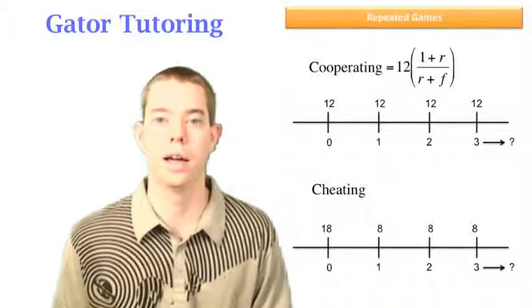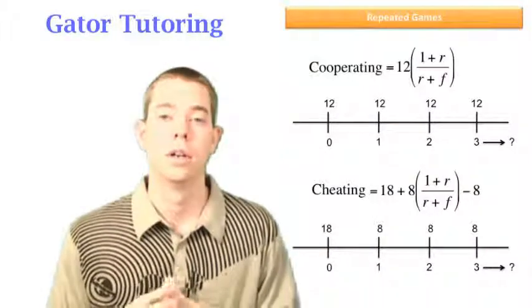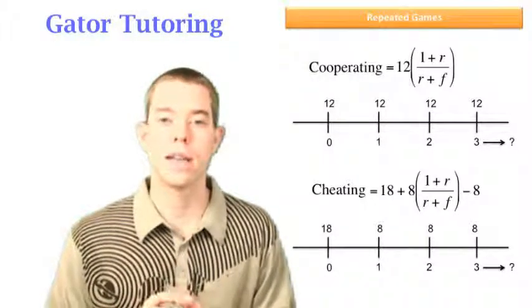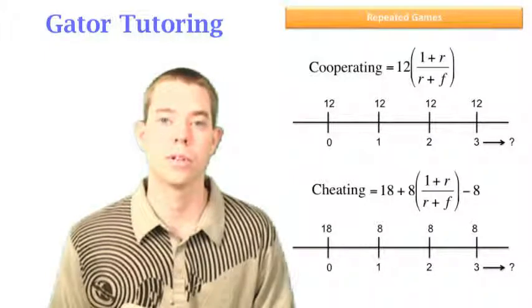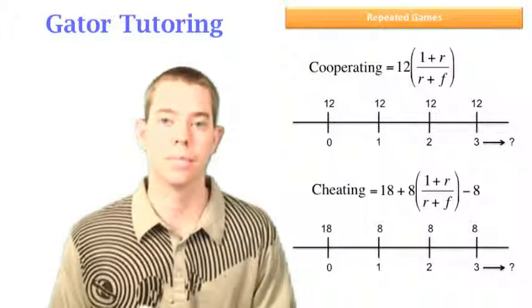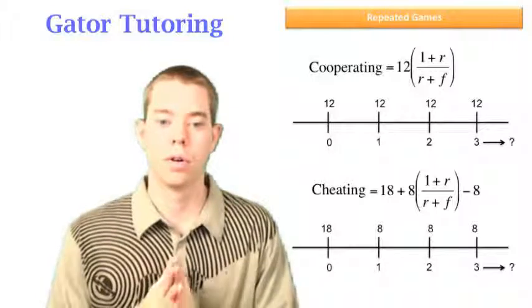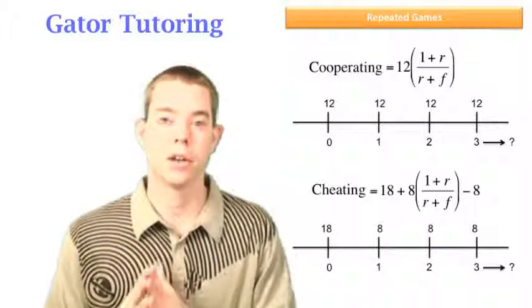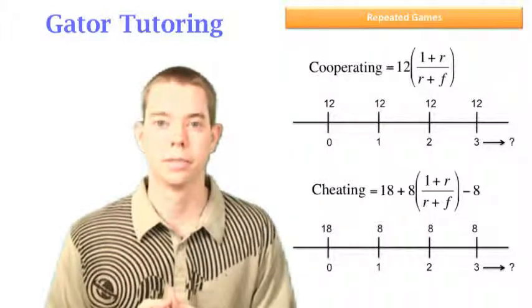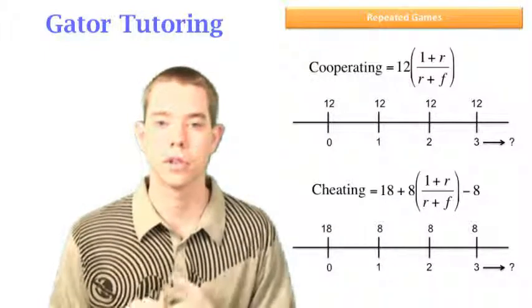So what does this look like as an equation? Well, we have the $18 that we get right now. Then we're going to make $8 indefinitely into the future. But we didn't make that $8 in time period 0. If you look at time period 0, we made $18. So that's why we have the minus 8 out to the right, because this is saying the 8 times the (1+r)/(r+f), that's assuming that we made 8 starting in year 0 into the future indefinitely. But we didn't make it in year 0. So we have to subtract away that 8. So make sure you understand that.